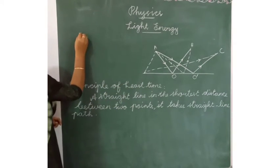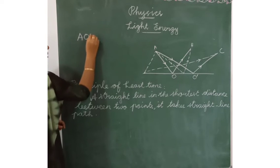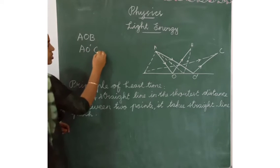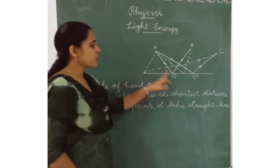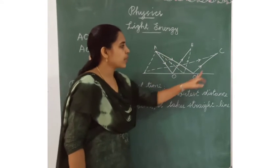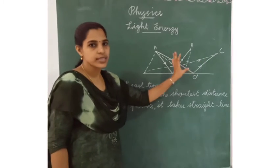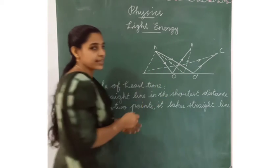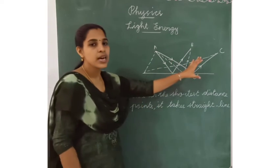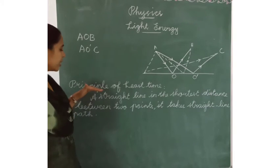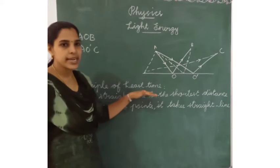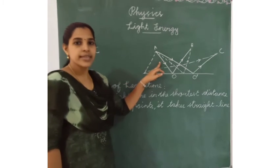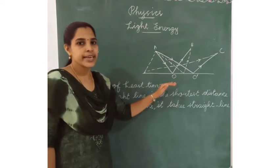The shortest paths are AOB and AO'C. These are the shortest paths of reflection. The dotted lines are the longer paths. According to the principle of least time, the angle of incidence and angle of reflection are equal.